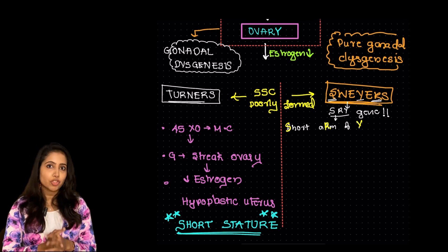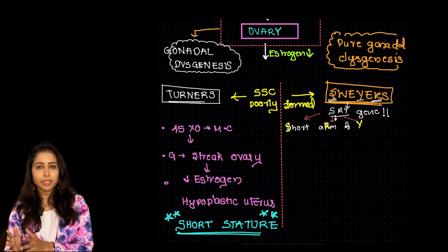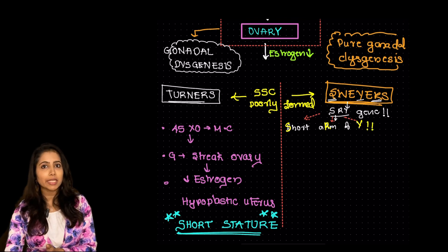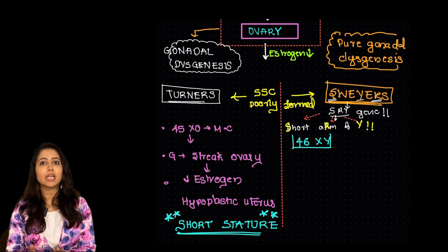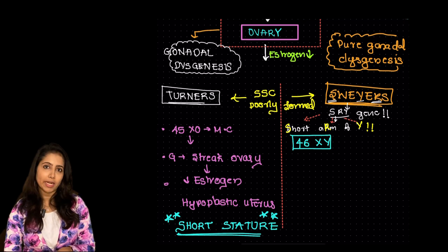So as we mentioned the Y chromosome is responsible for the development of the gonads. So in this case as the SRY gene is abnormal the gonads are not formed properly or there is dysgenetic gonads.